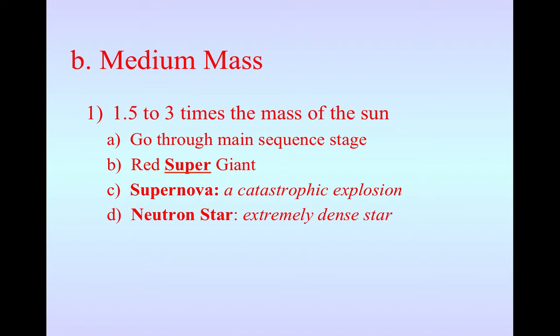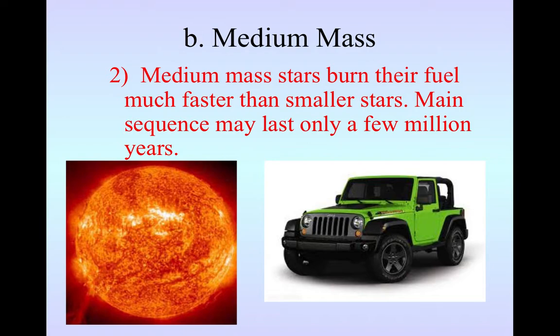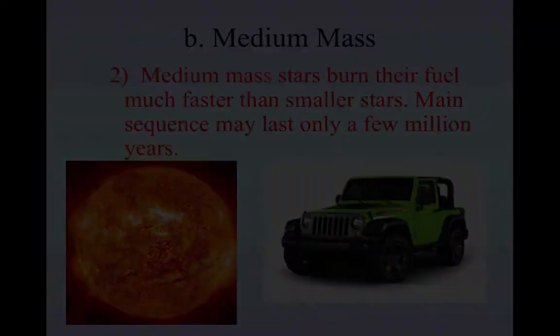The matter is packed so closely together. And they're actually very small in size. They think they're only about, I mean, depends on the neutron star, but some estimates are only about 12 miles across. So that's the size of a small city. But think of all that matter smushed into that tiny little space. Medium mass stars, you can think of as kind of a mid-sized SUV. They burn their fuel much faster than smaller stars, and they only last in main sequence for a few million years.